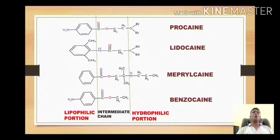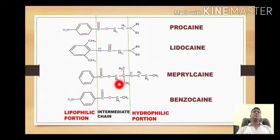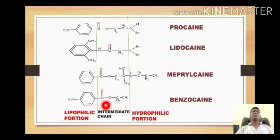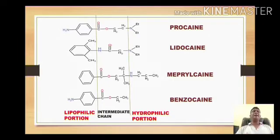Whenever there is a question on structure-activity relationship of local anesthetic agents, your first duty is to draw these structures along with their names and segregate them into three parts: the first being the lipophilic portion, the second the intermediate chain, and the third the hydrophilic portion. Then we can see how modification in these three portions will give either an increase or decrease in activity.